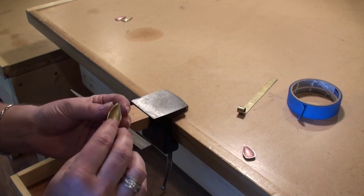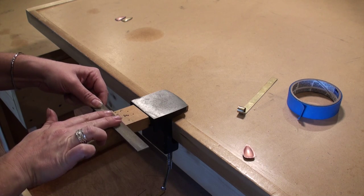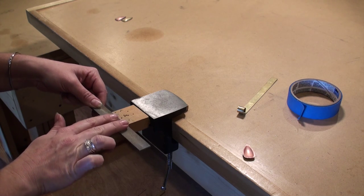So what I'm going to do is place it face down on a file, hold my file, and move my piece back and forth to file off that edge.